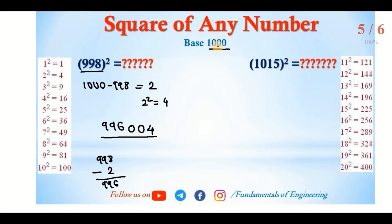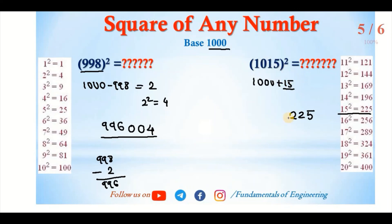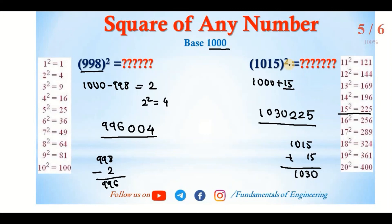Now 1015, a four-digit number near 1000. By the traditional method it takes time, but using base 1000 it's fast. 1015 is greater than 1000, so 1015 minus 1000 is 15. Fifteen squared is 225. Since 1015 is above 1000, we add: 1015 plus 15 is 1030. So we write 1030 followed by 225, giving 1030225 as the square of 1015.